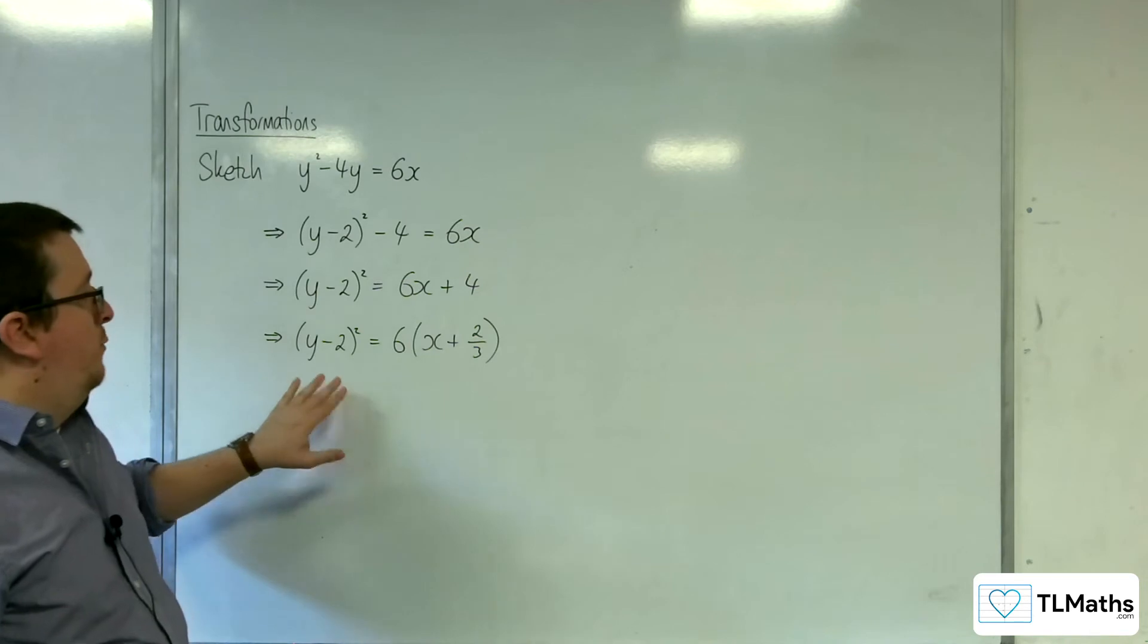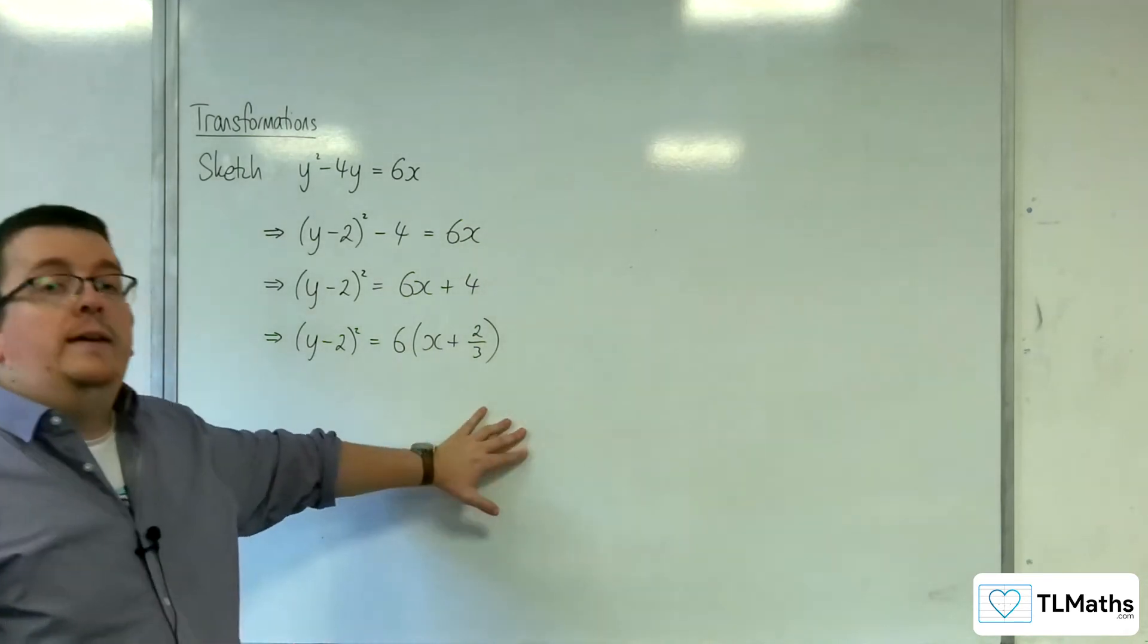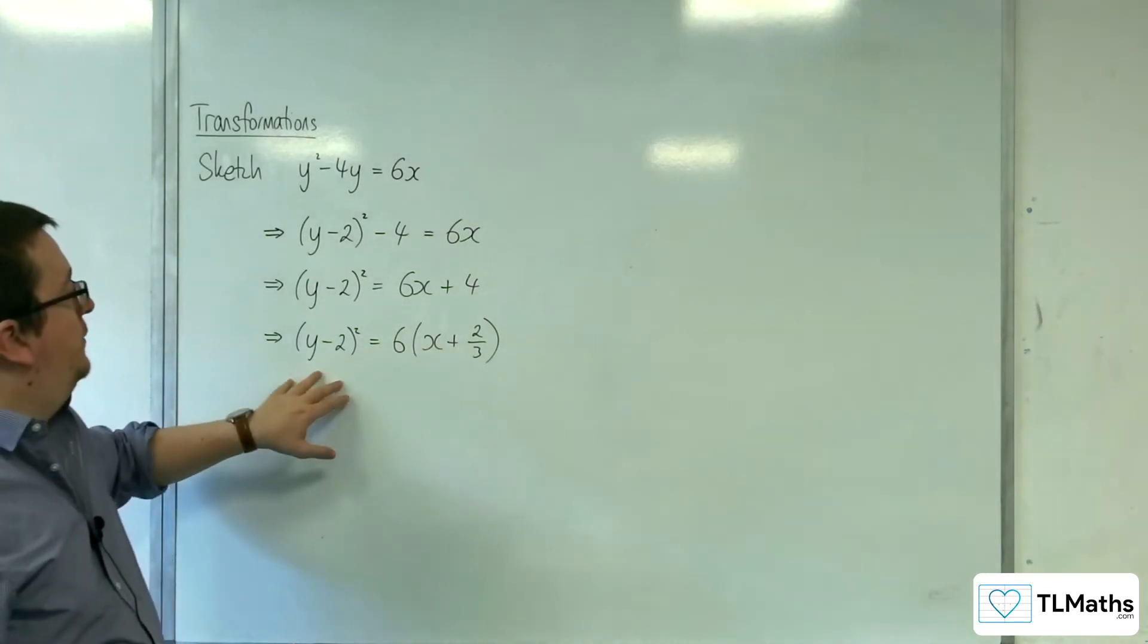And now this is telling me that the vertex of my parabola is at minus 2 thirds, 2. So I know that the original graph, y squared equals 6x, has been translated by the vector minus 2 thirds, 2.